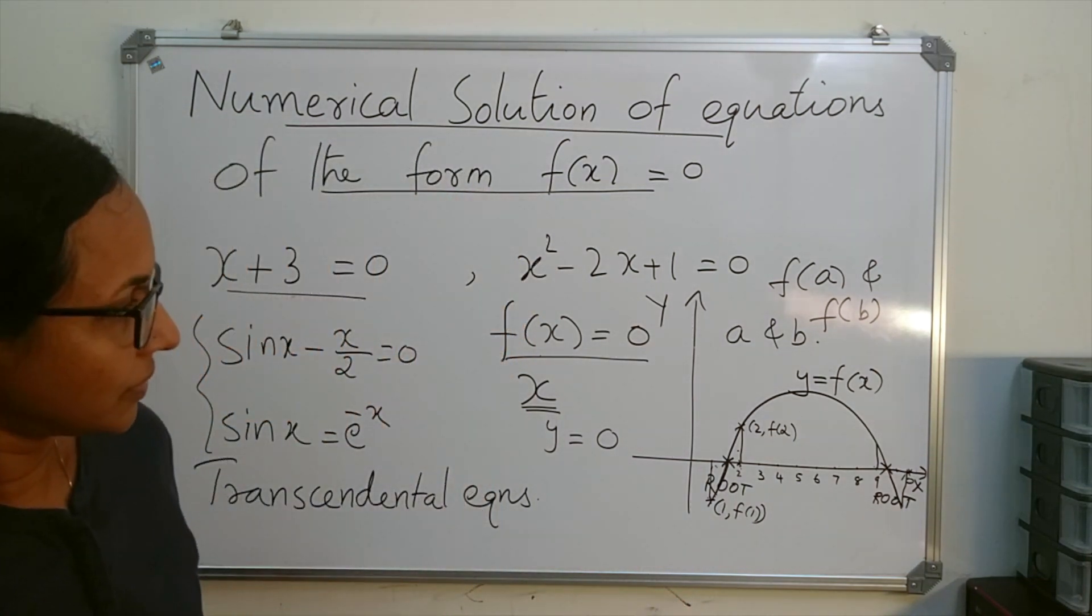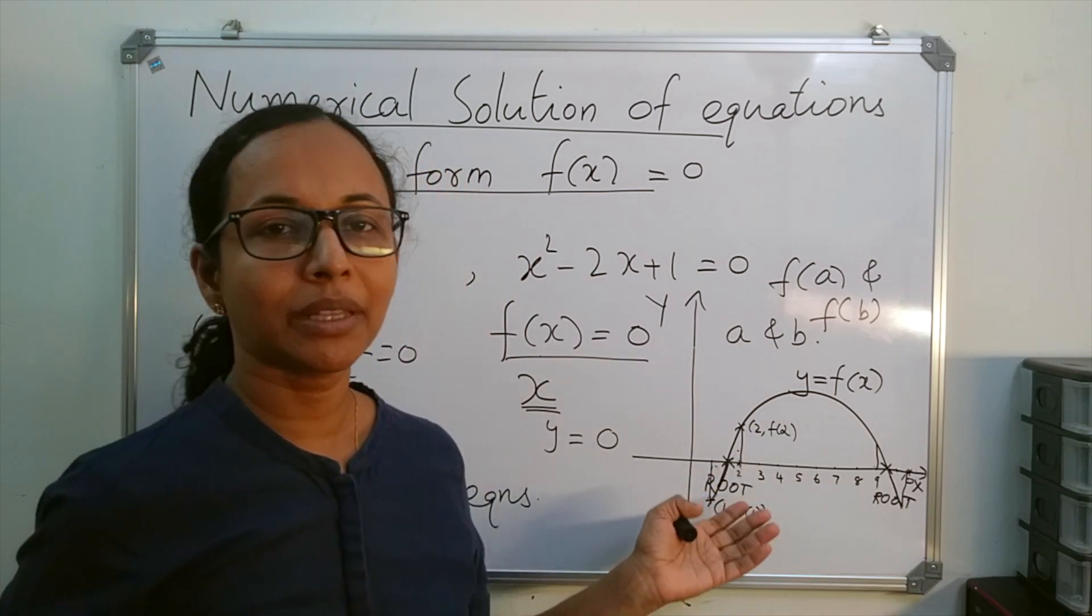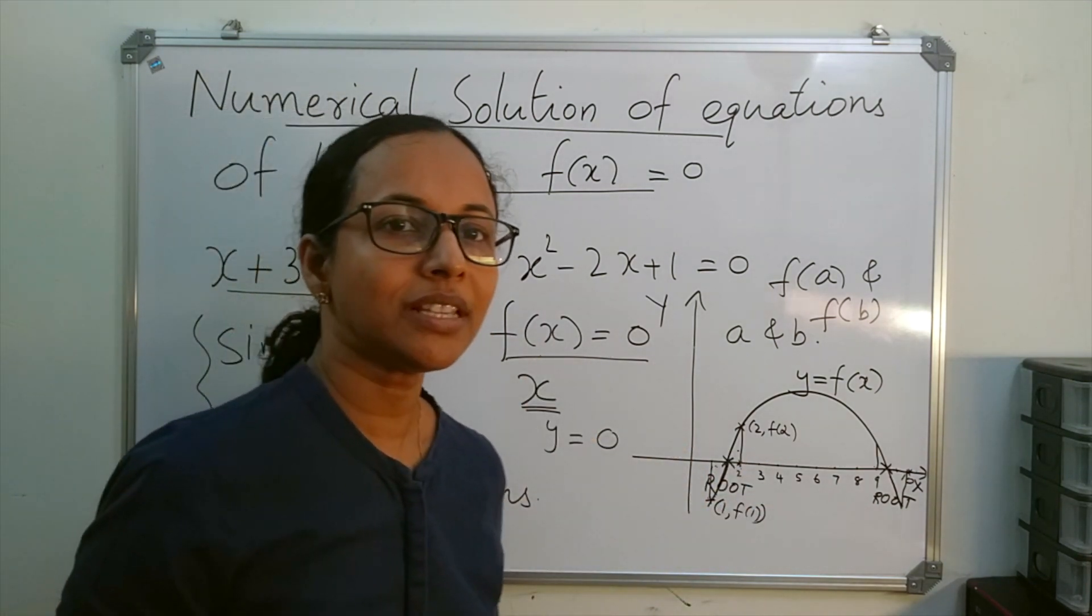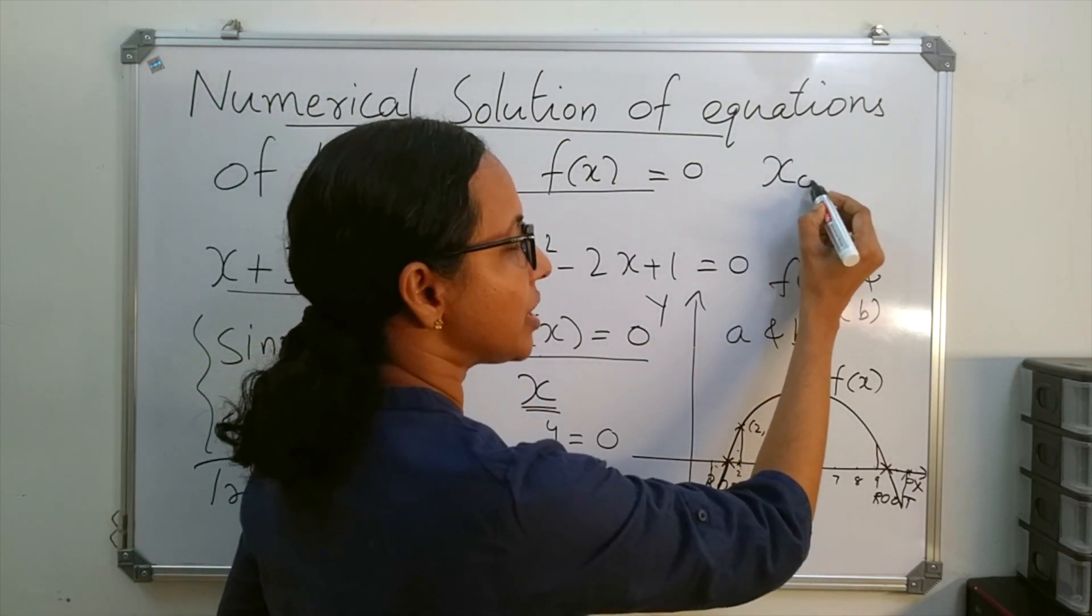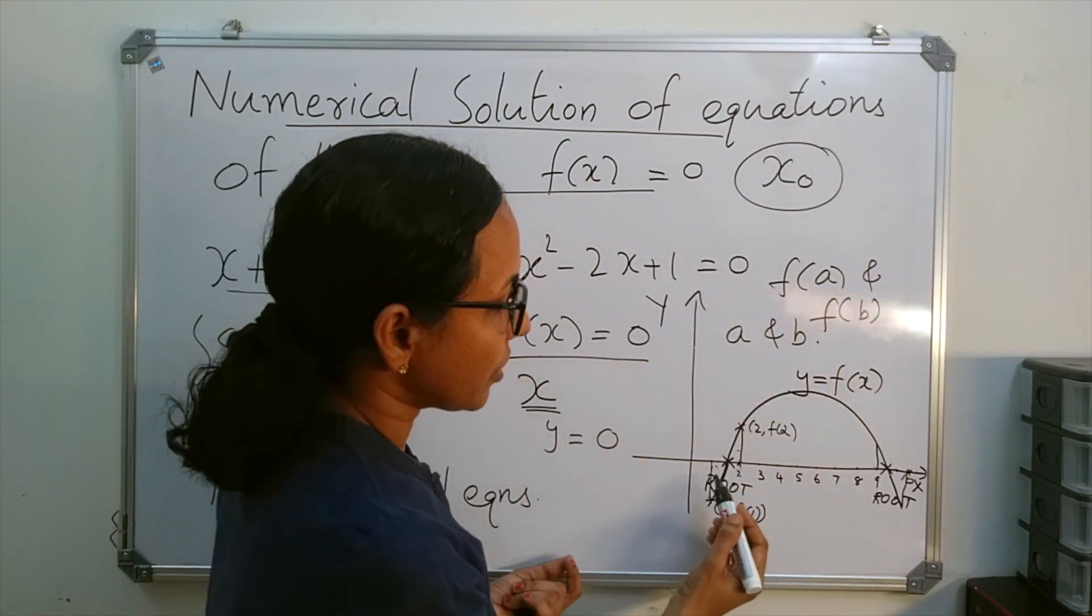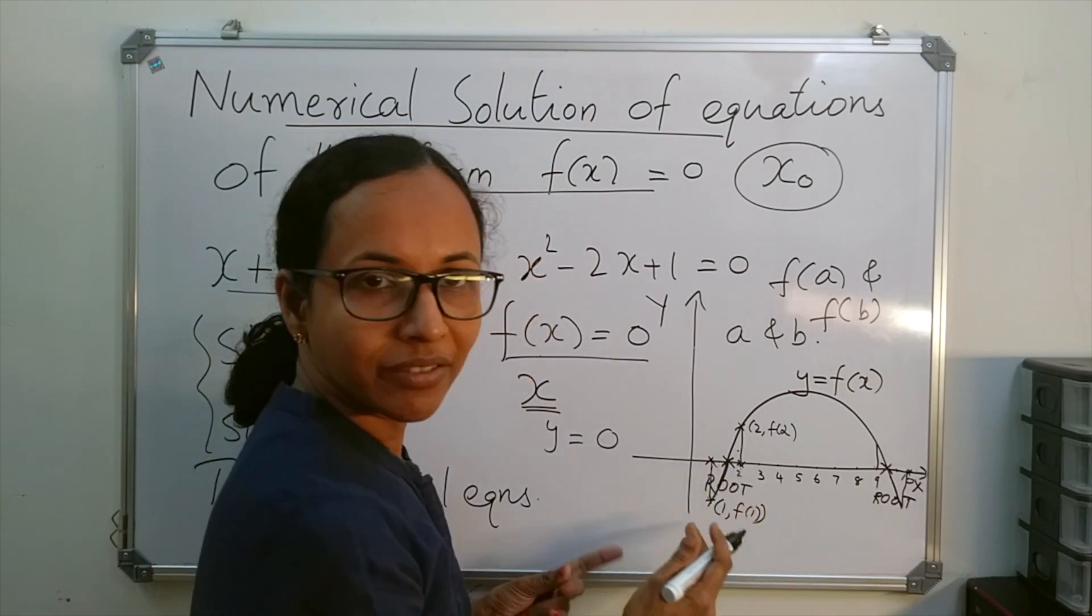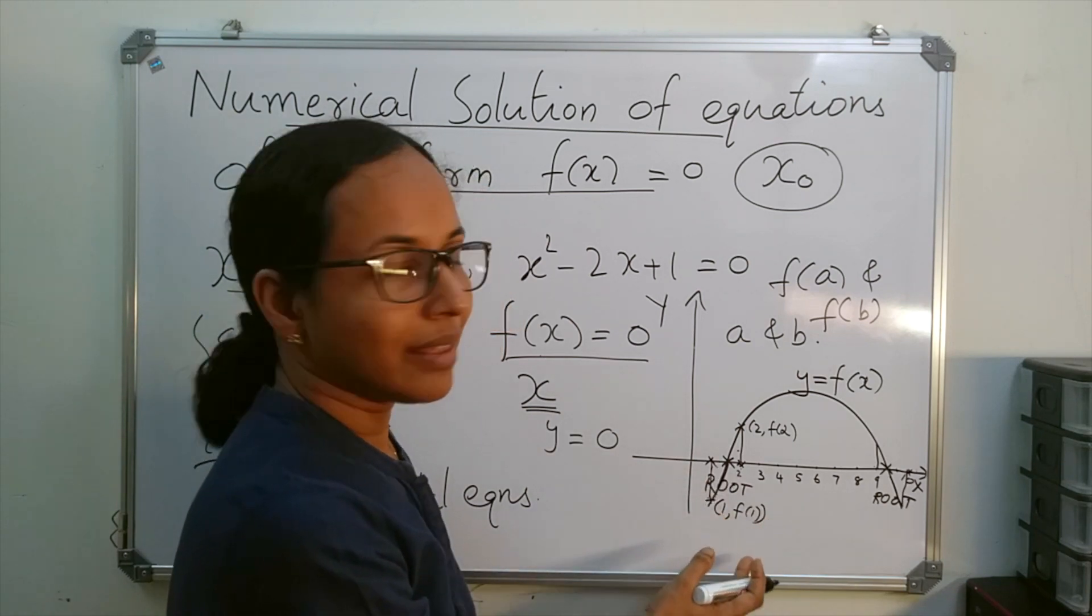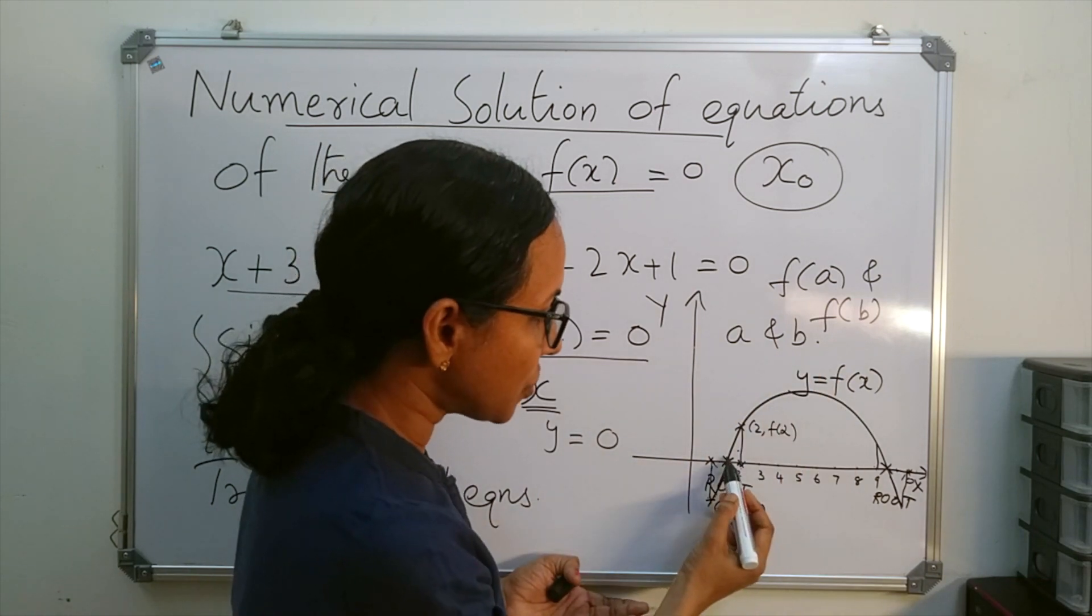Now there are different numerical methods for solving such equations. In all these methods, we start with an initial approximation usually denoted by x₀. You can take x₀ as 1, 2, or 1.5 - any value that lies near the root.